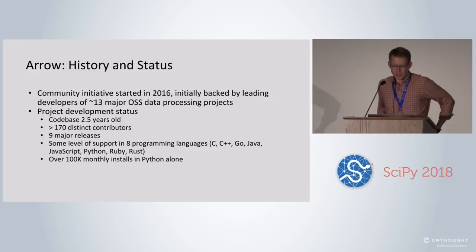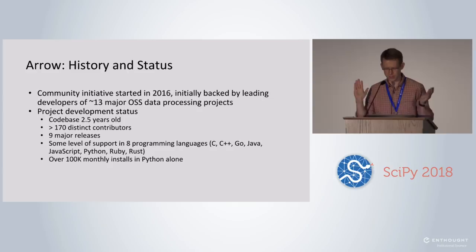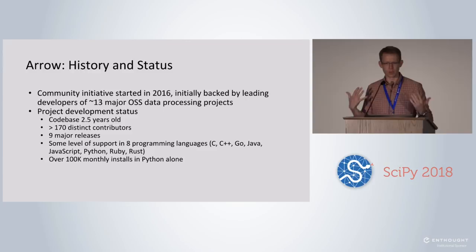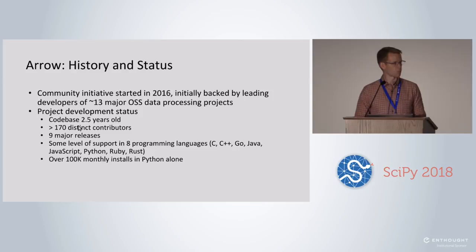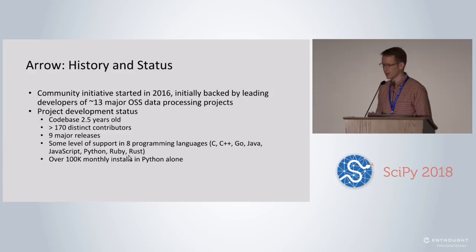It's been about two and a half years since we started the project. We started with a group of about 25 people who were leaders in different open source, mostly big data projects. We did it in the Apache Software Foundation because many of the people working on the project work for companies in direct competition with each other — by doing it in Apache, we diffused that problem from the get-go. Over the last two and a half years, we're approaching 200 contributors, we've made a bunch of releases, and we have support in eight programming languages. In Python alone, the libraries are being installed more than 100,000 times per month — about a factor of 10 away from Pandas, but for a young project, we're doing pretty well.